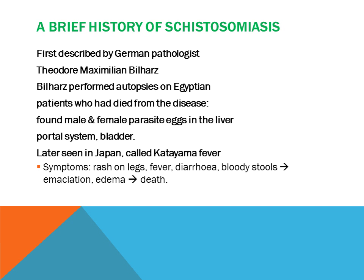A brief history of Schistosomiasis. It was first described by German pathologist Theodor Maximilian Bilharz. He had performed autopsies on Egyptian patients who had died from the disease. He found male and female parasite eggs in the liver, portal system and bladder. It was later seen in Japan and called Katayama fever, with symptoms including rash, fever, diarrhea, bloody stools which often leads to emaciation, oedema and eventual death.